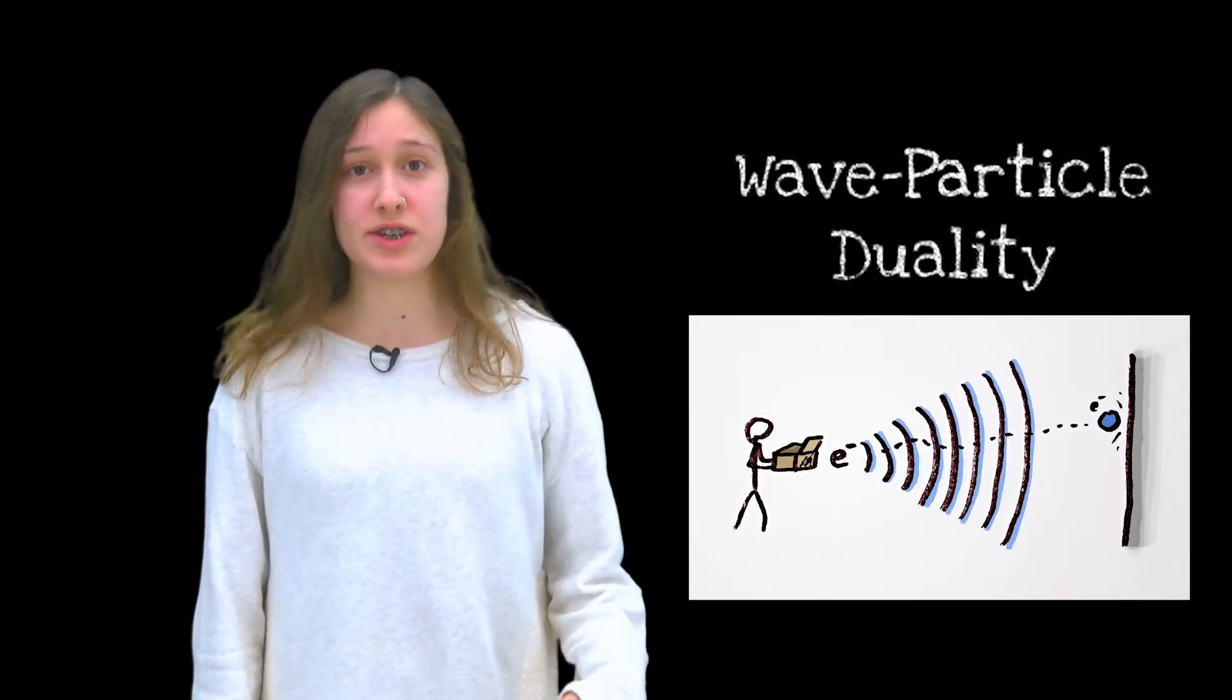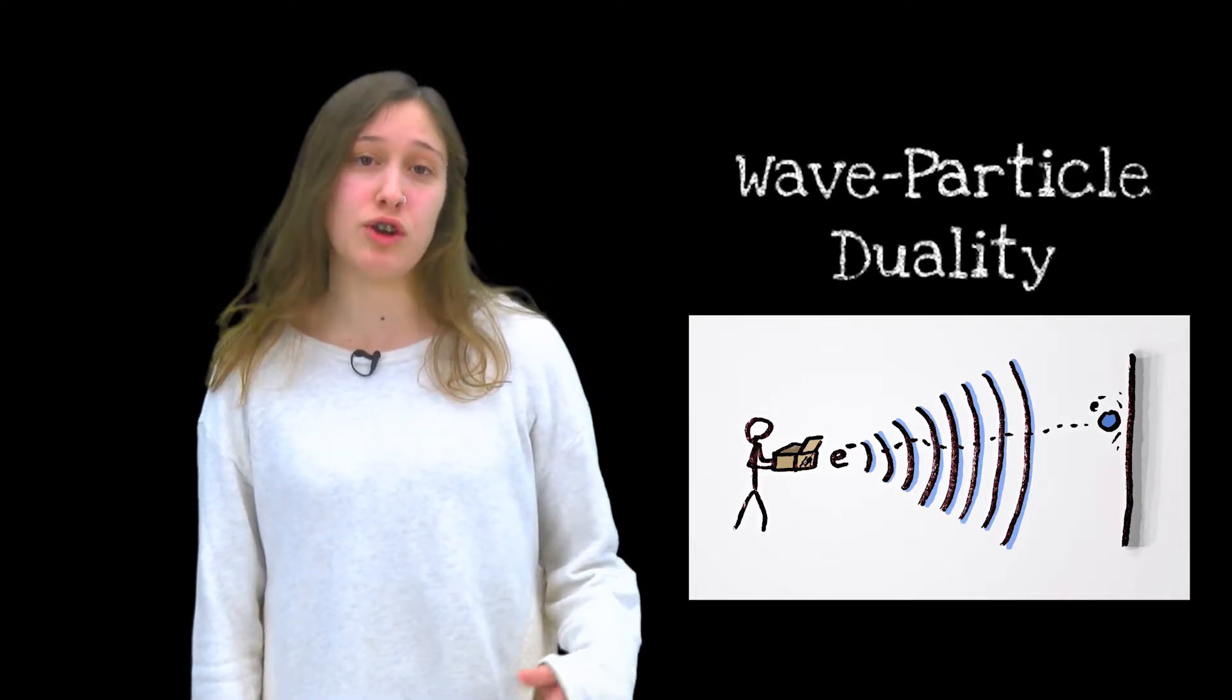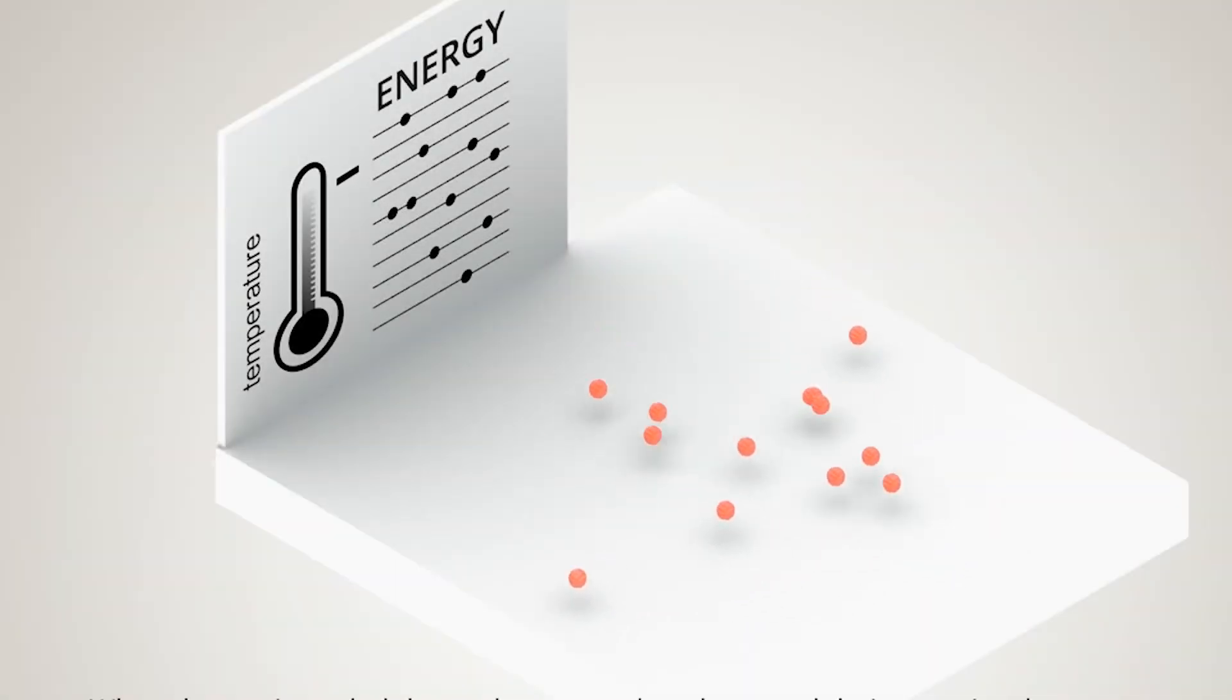Wave-particle duality is just a fancy term to say that particles do not always behave like particles, but that sometimes they also behave like waves. So basically, in these extremely cold systems, as the particles lose energy and slow down, they stop behaving as much like particles and start to behave more and more like waves.